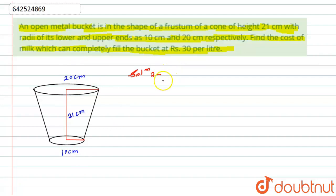So here I can say that the capital R is equals to 20 centimeter, while small r is given to us 10 centimeter. Similarly, height of the frustum is 21 centimeter. It is all given to us. Now what is asked here to find the cost of milk which is required to completely fill the bucket. So for that I have to find the volume for this frustum of cone.